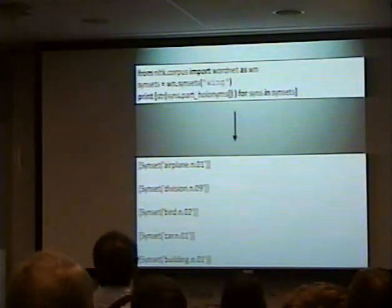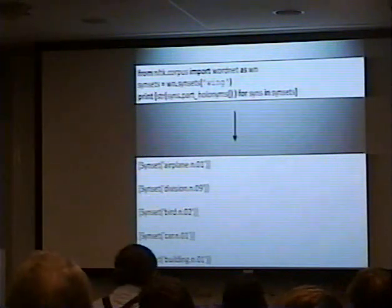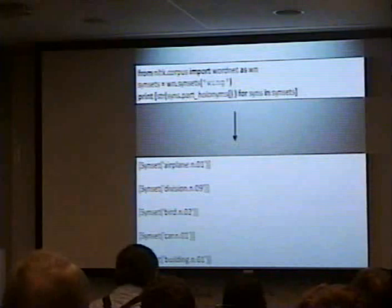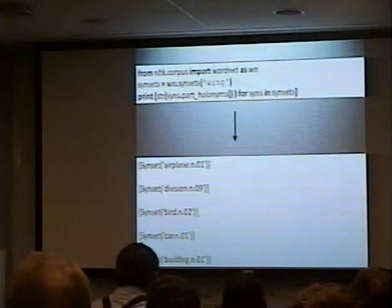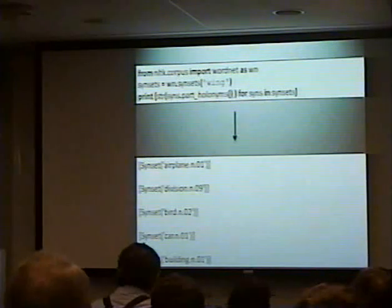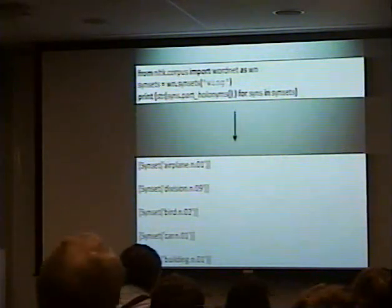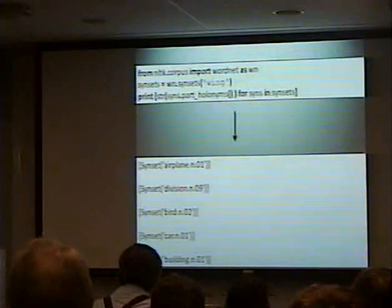Now we're going to look at holonyms. I put in the word 'wing', and same thing — except this time we run the function part_holonyms on each item in that list, and it gives us everything that a wing is a part of. So: airplane, bird, car, vision, building, and it goes on and on.